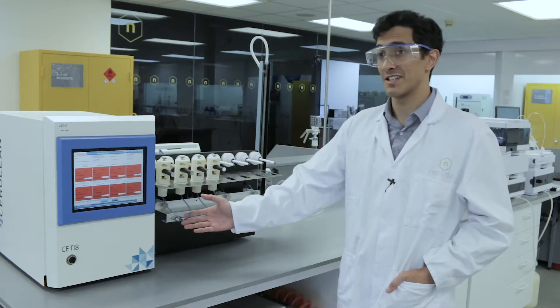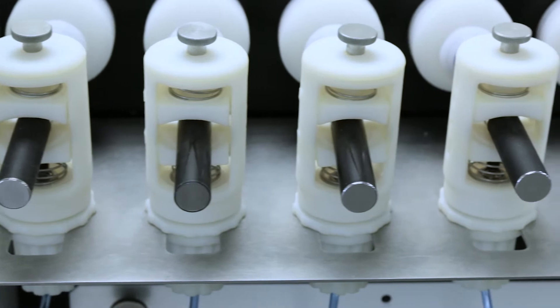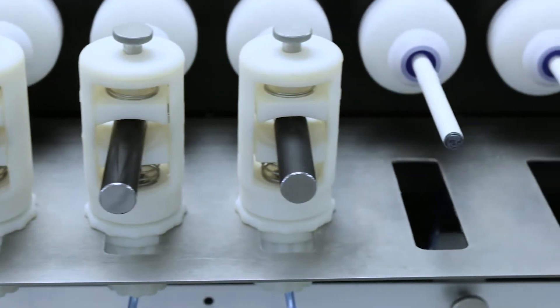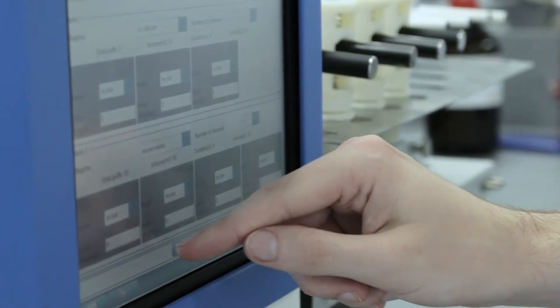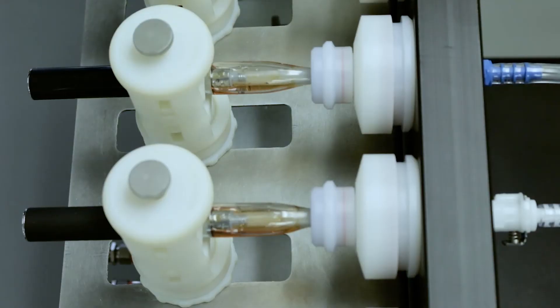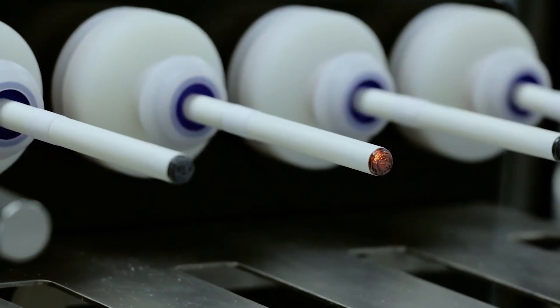Here is our e-cigarette testing instruments. With this machine we can capture the aerosols from e-cigarettes. We either capture them onto fibre filters in the case of nicotine emissions or onto DNPH cartridges to capture any of the carbonyls, the potentially harmful emissions.